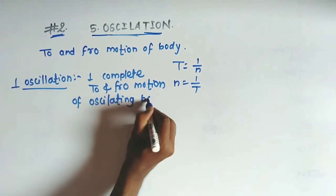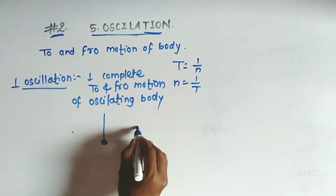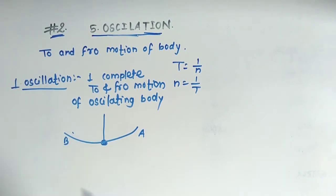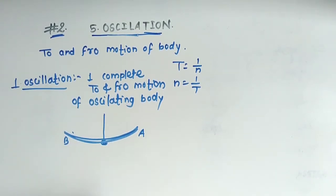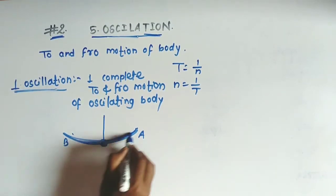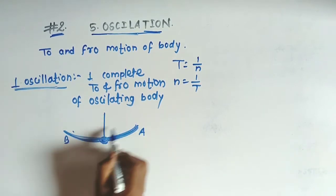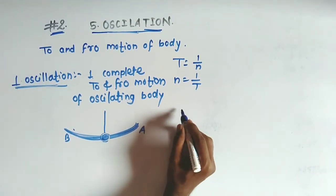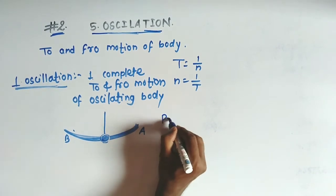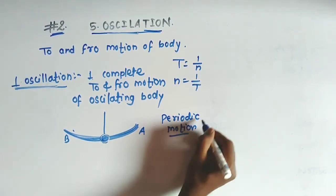For an oscillating body, one oscillation can be understood with a pendulum example. The pendulum goes from position A to position B — one complete oscillation means going from A to B and returning from B back to A. So one complete oscillation is one complete to-and-fro motion of the oscillating body, which repeats itself in equal intervals of time.